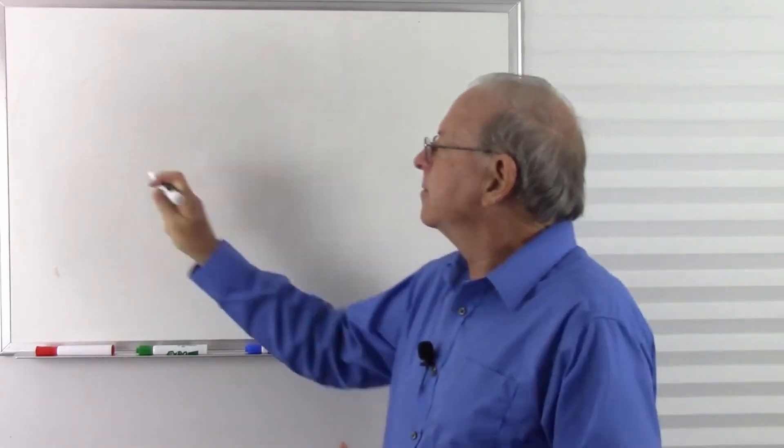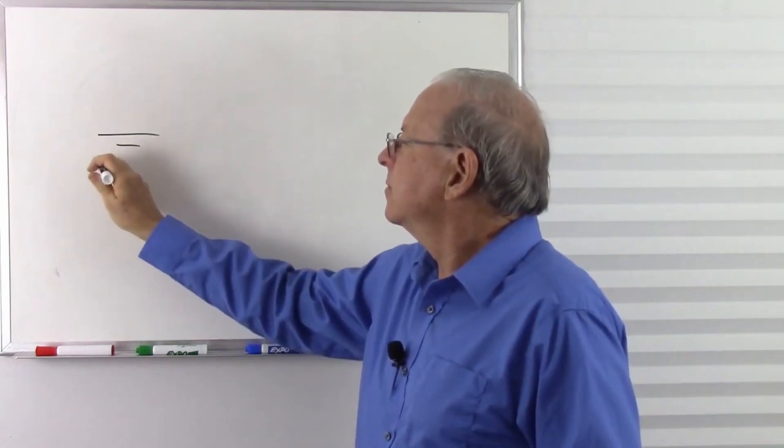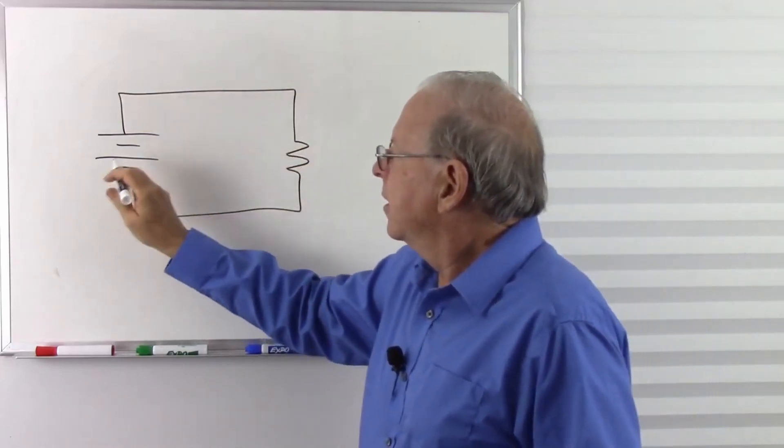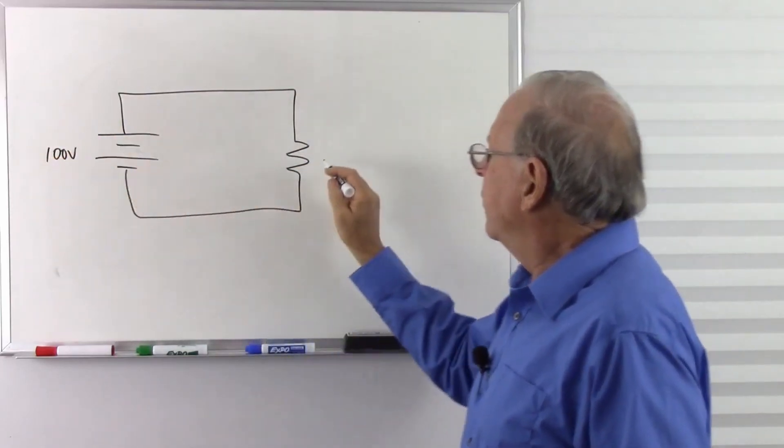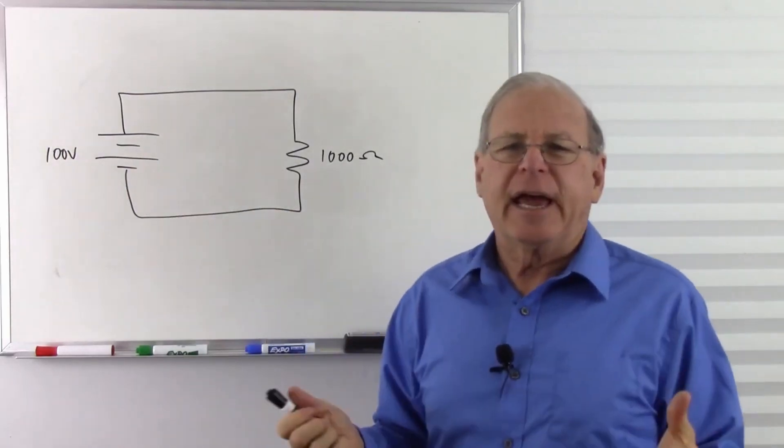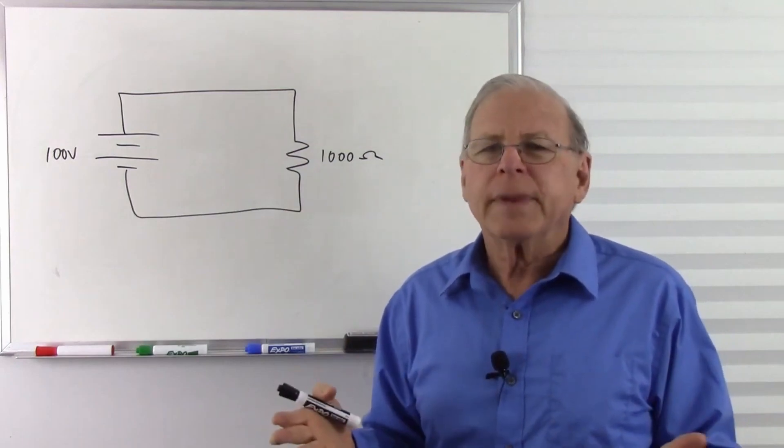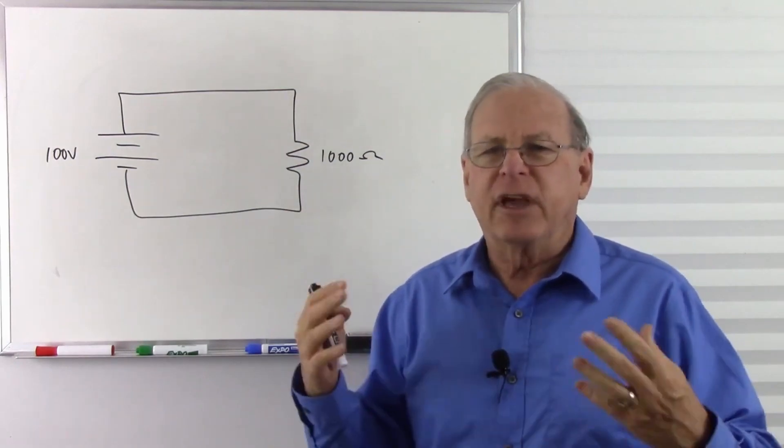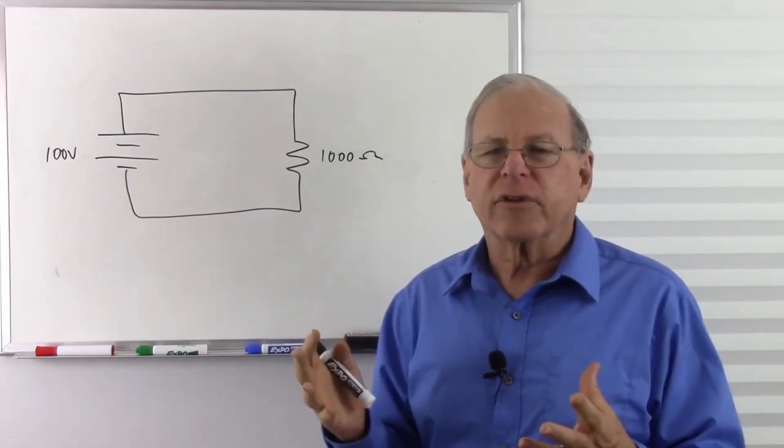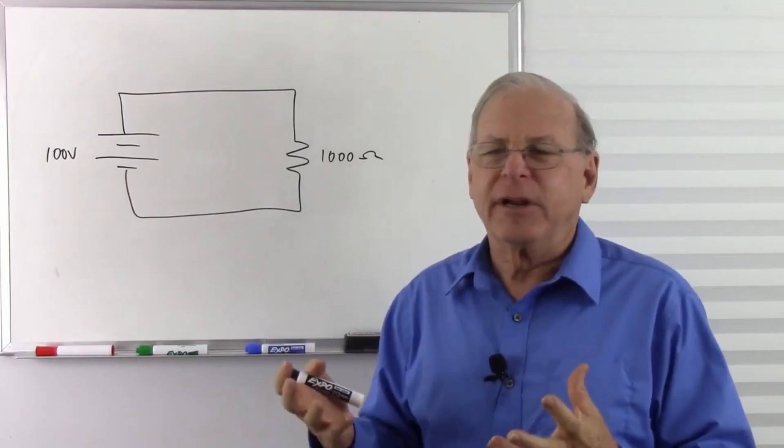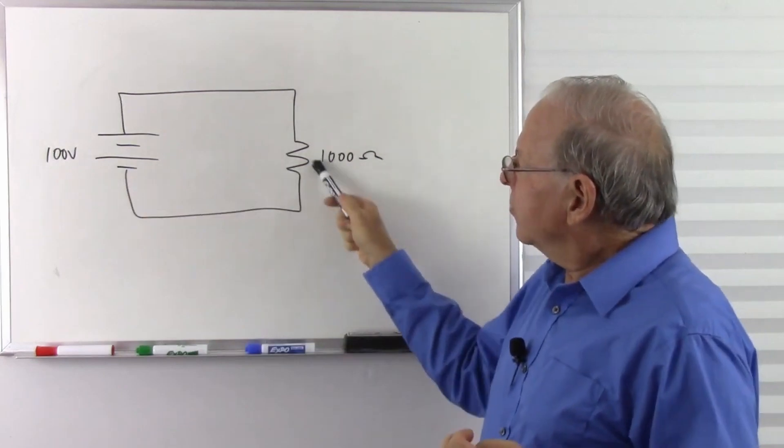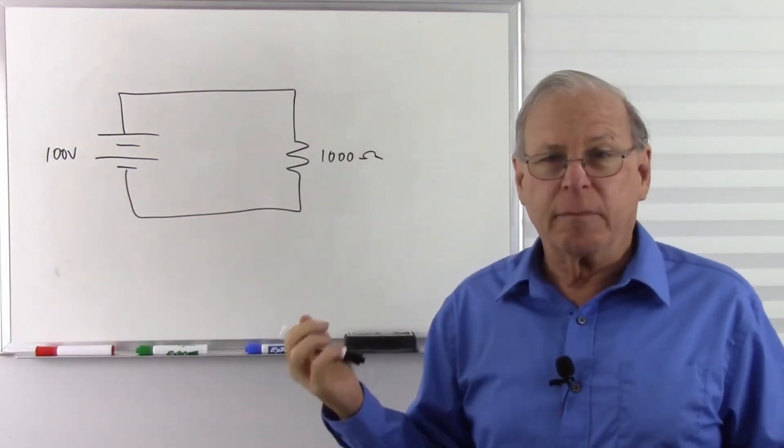For example, let's make a circuit here. Let's say we have 100 volts and 1,000 ohms. Now the human body typically has a resistance of around 100,000 ohms or maybe more. But under the right conditions, let's say it's a humid day, you're sweating, you get good solid skin contact, and in fact, the higher the voltage, the lower the skin resistance. So it has kind of an exponential effect there. So let's say 100 volts, worst case scenario, you might have about 1,000 ohms of body resistance.